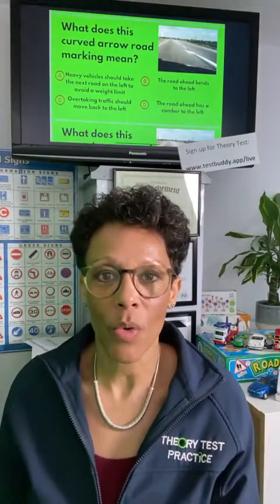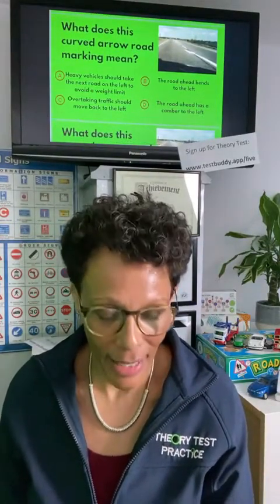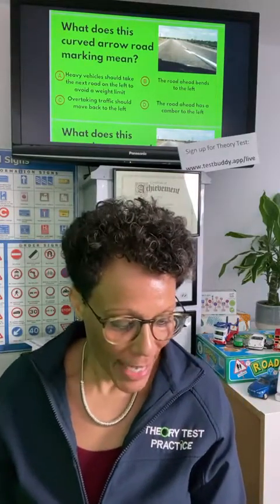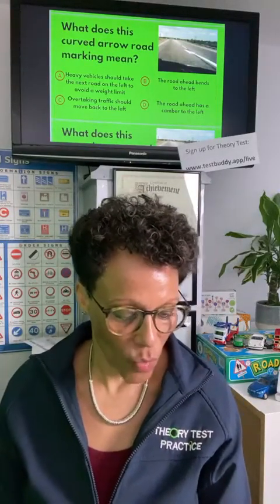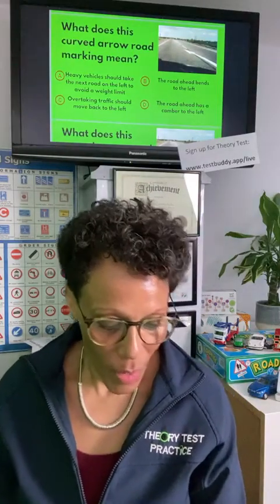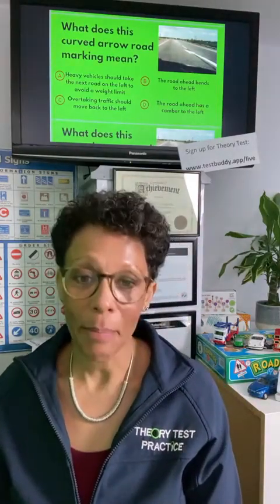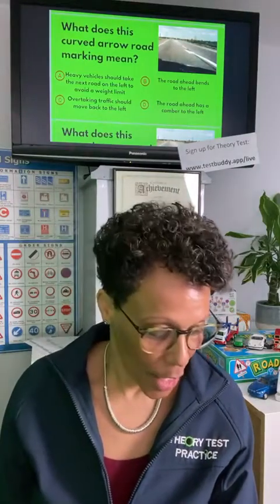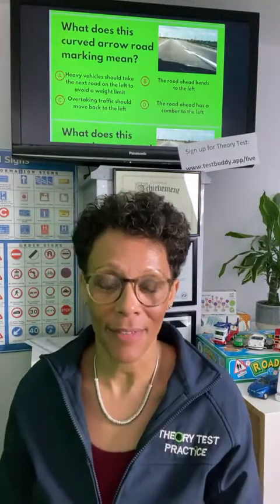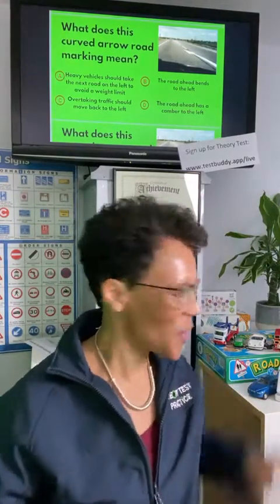Question two: what does this curved arrow road marking mean? Does it mean A: heavy vehicles should take the next road on the left to avoid a weight limit; B: the road ahead bends to the left; C: overtaking traffic should move back to the left; or D: the road ahead has a camber to the left? I'll give you a few seconds to answer.